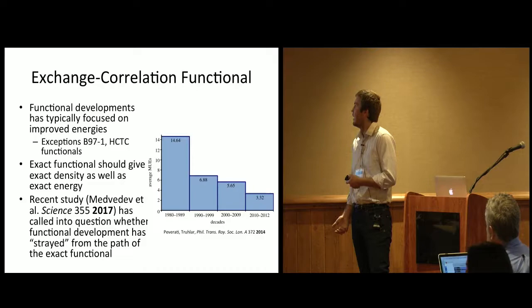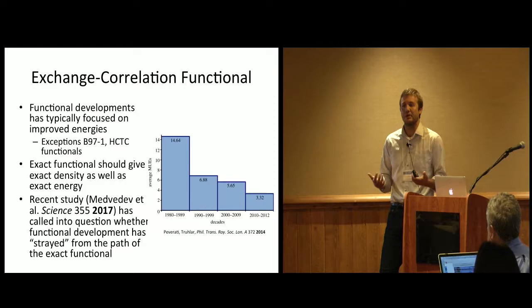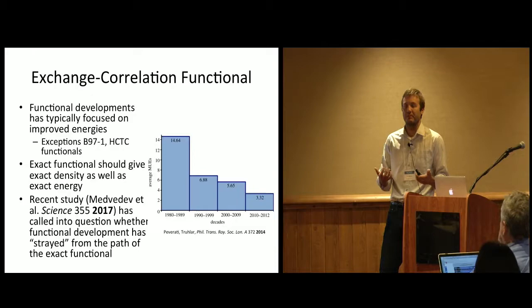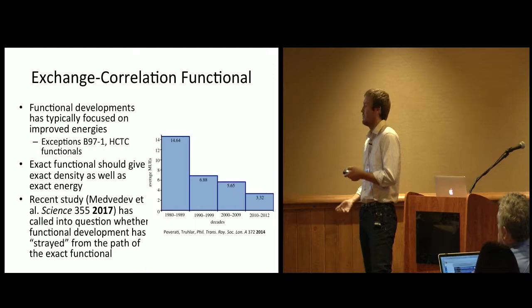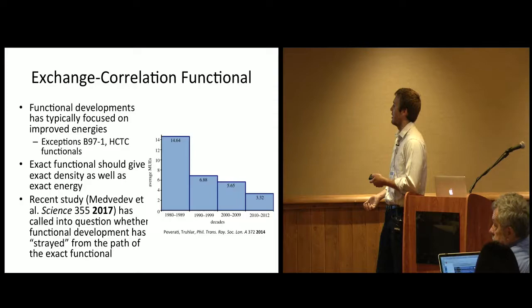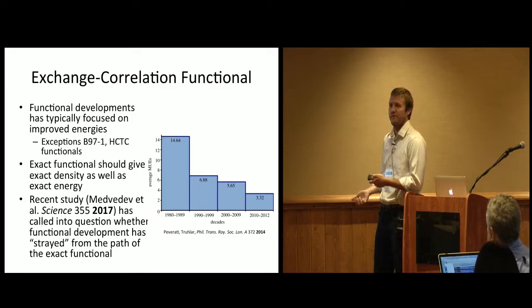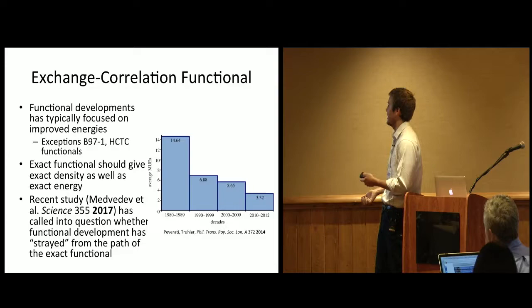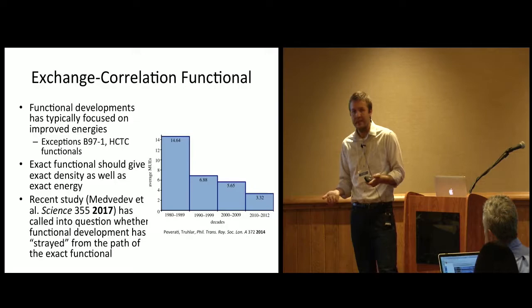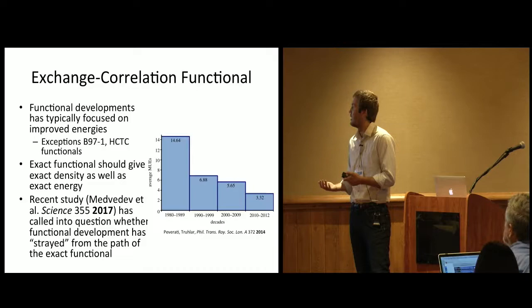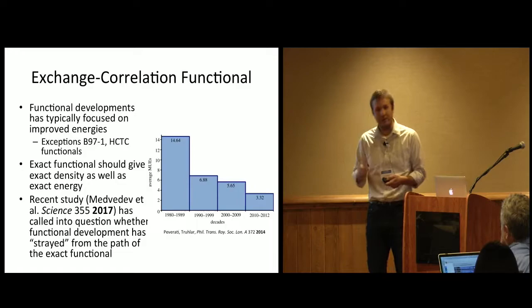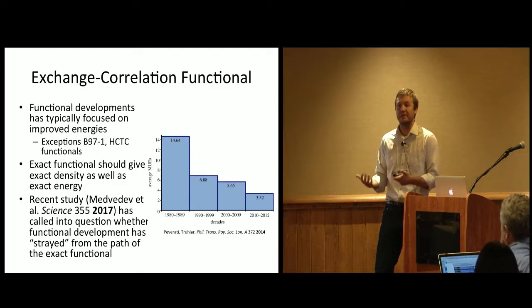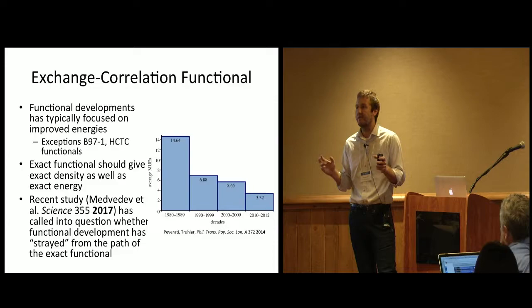No matter how we develop functionals, functionals are typically focused on improving energies in systems, and that's because chemists are normally interested in relative energies. You can think of products minus reactants where a chemical reaction happened, and we're wanting to find the energy of that reaction. There's some exceptions to this, but broadly that's true. When we look at functionals, this is from a Trular paper where it's the errors in energies for functionals developed in different decades for a test set of molecules. The errors in energies have decreased over the decades, so you can really see that's where the focus has lied. One thing we know about the exact functional, though, is that it should give the exact density as well as the exact energy.